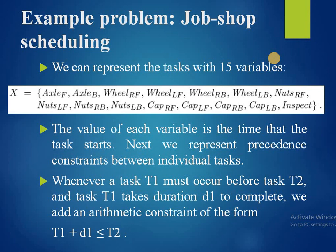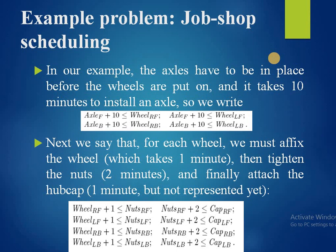We represent precedence constraints between individual tasks. Whenever task T1 must occur before task T2, and T1 takes duration D1 to complete, we add an arithmetic constraint of the form T1 + D1 ≤ T2. In our example, the axles must be in place before the wheels, and it takes 10 minutes to install an axle, so: axle_lf + 10 ≤ wheel_rf, and axle_lf + 10 ≤ wheel_lf.